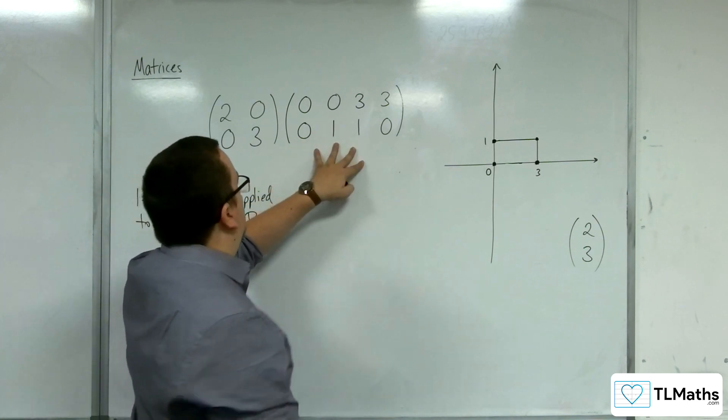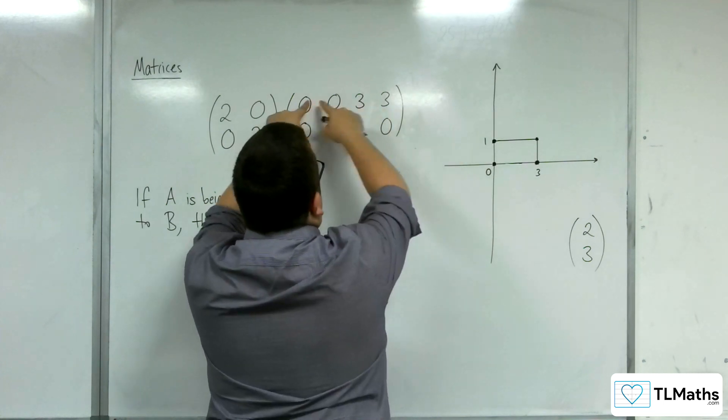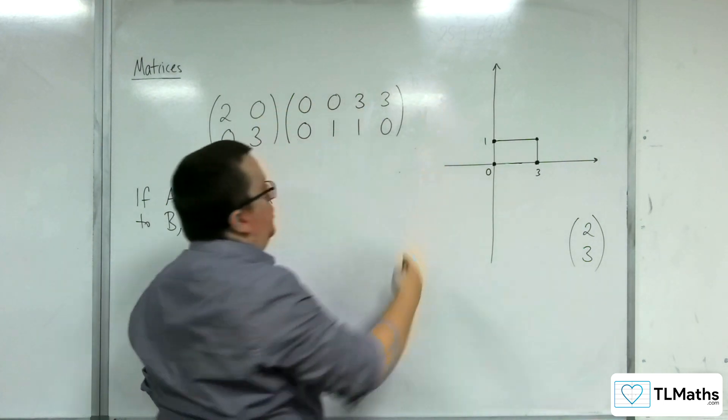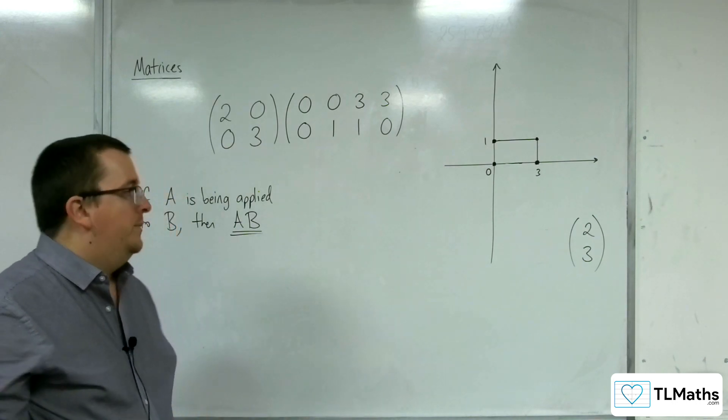You can't multiply that matrix by 2, 0, 0, 3 the other way around, because you'd have four elements going up against two. And so there is that mismatch. So you wouldn't be able to do it anyway.